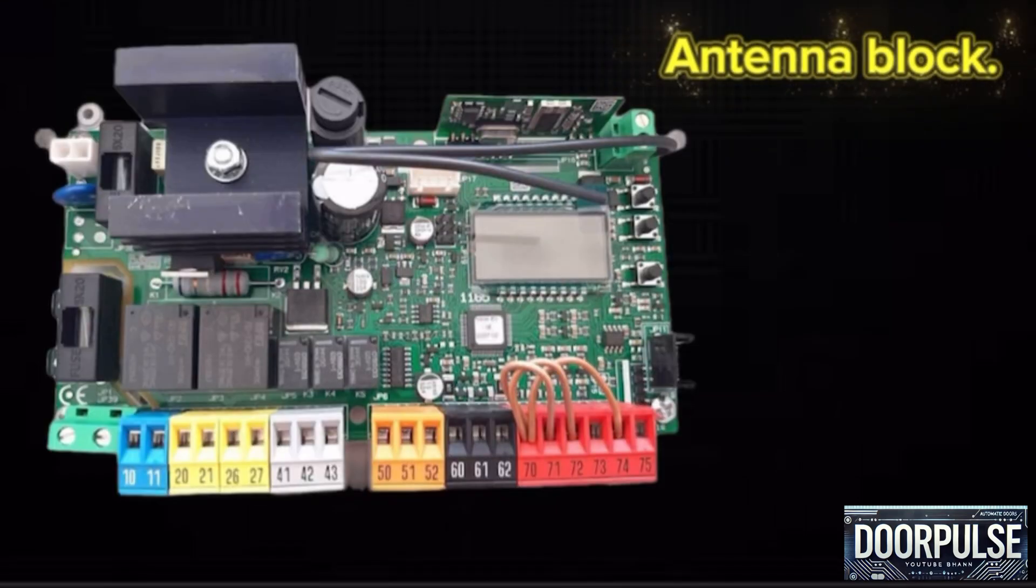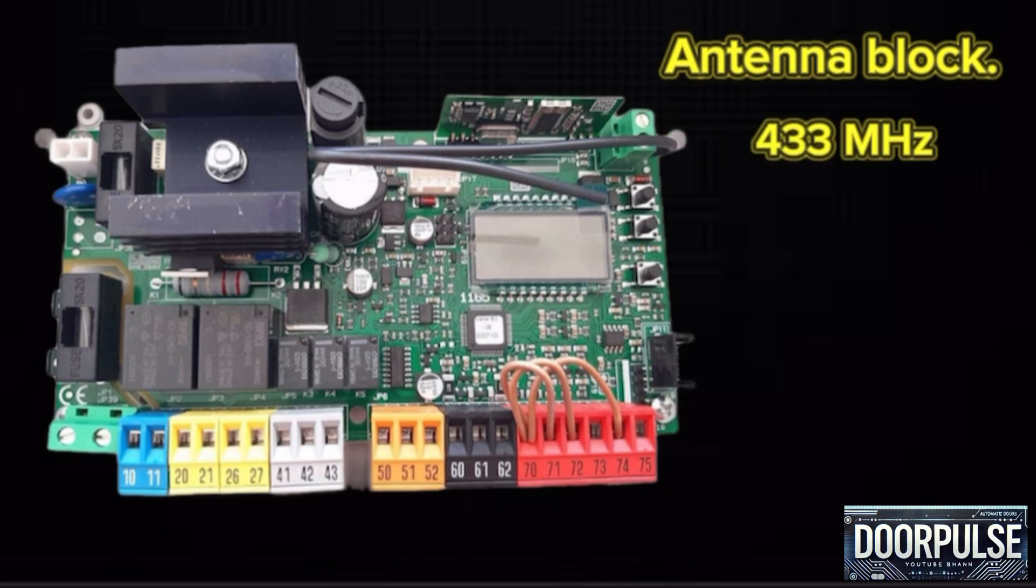Antenna block: antenna block have two terminals for antenna input. Use an antenna tuned to 433 megahertz. Use RG 58 coax cable to connect the antenna and receiver.